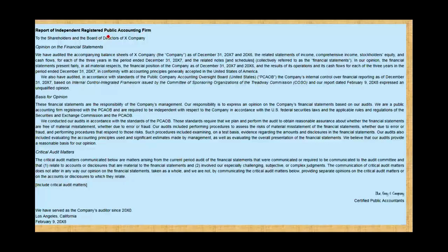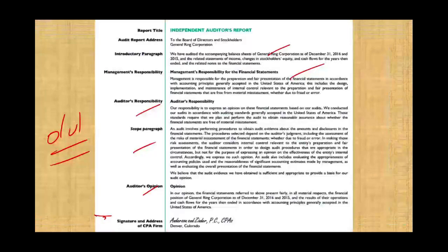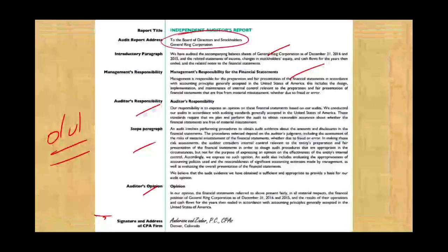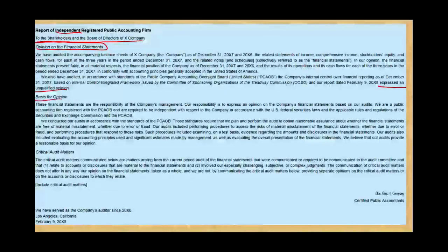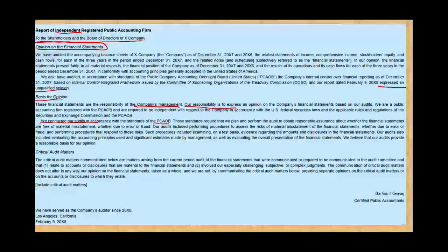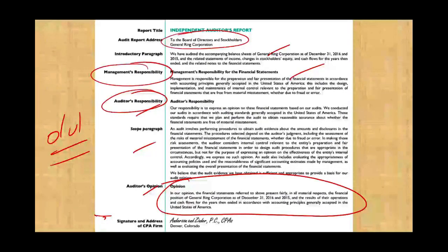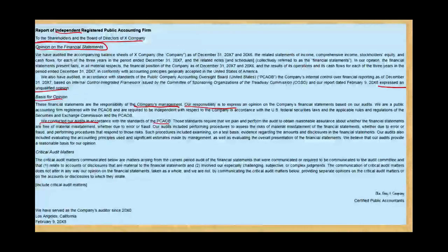In the new report, we still have the word 'independent' in the title, addressed to the shareholders and board of directors. Notice the opinion is now first — we expressed an unqualified opinion at the top. Under Basis for Opinion, you'll see the management responsibility: 'The financial statements are the responsibility of the company's management.' Then the auditor responsibility: 'Our responsibility is to express an opinion,' and how the audit was conducted according to PCAOB standards, since we're discussing public companies.